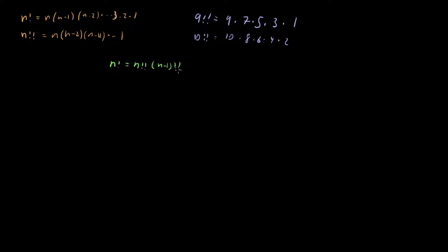We can see this clearly in the case of n equals 10. We have n double factorial, which is 10 times 8 times 6 times 4 times 2, times n minus 1 double factorial, which is 9 double factorial: 9 times 7 times 5 times 3 times 1. If you multiply these two together, you get all the factors that go into 10 factorial, so this property is manifestly true.